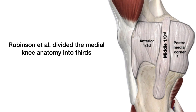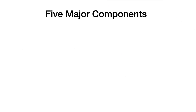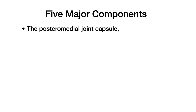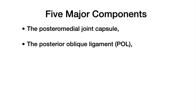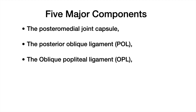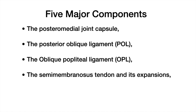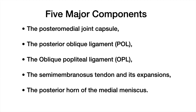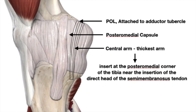We will discuss the anatomy of the posteromedial corner of the knee. The posteromedial corner of the knee has five major components: the posteromedial joint capsule, the posterior oblique ligament, the oblique popliteal ligament, the semimembranosus tendon and its extensions, and the posterior horn of the medial meniscus. Now we will discuss each of them one by one.